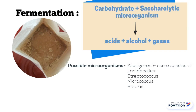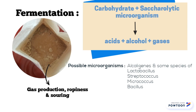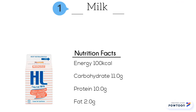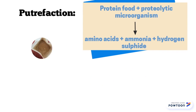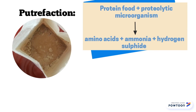The possible microorganisms are Alkaligenes species and some species of Lactobacillus, Streptococcus, Micrococcus and Bacillus that cause the production of gas, ropiness and souring. When all the lactose is used up, there will be putrefaction, as milk is high in both carbohydrates and protein. Putrefaction is the biological decomposition of organic matter such as protein, with production of ill-smelling and ill-tasting compounds. In the formula of putrefaction, proteolytic microorganisms digest the protein in milk and produce amino acids, ammonia and hydrogen sulfide.